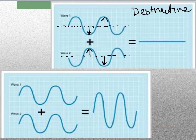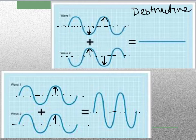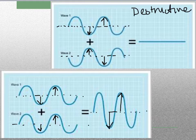Our other example is constructive interference. Again, the equilibrium line runs through the center of both waves. If you check it out, this one goes the same direction as that one — this one goes down at the same time that one goes down. So on both sides they add up to be twice as tall. They're adding up because their peaks are in the same place. So this one is constructive interference.